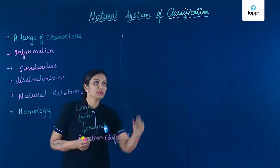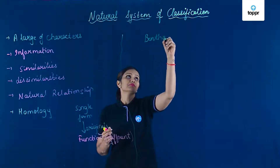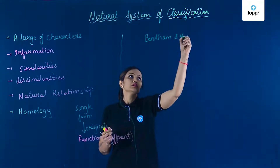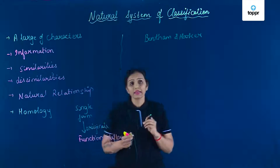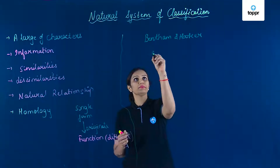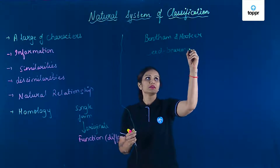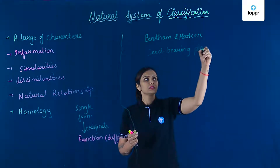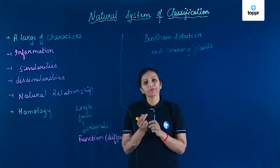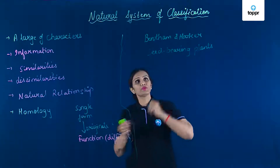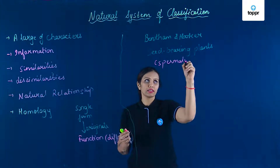Say for example, Bentham and Hooker. They gave the natural system of classification for the classification of seed-bearing plants, that is Spermatophyta. Bentham and Hooker ne various characters ko study karke classify kiya hai.